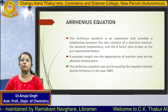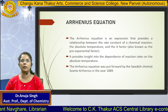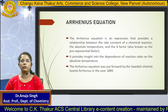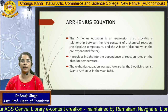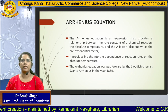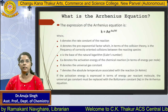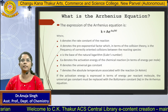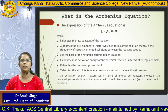Coming to the Arrhenius Equation. The Arrhenius Equation is used to determine the relationship between the rate constant of the chemical reaction and the temperature T. The rate constant is denoted as K. The equation is: K = A · e^(−Ea/RT), where K is the rate constant, A is the Arrhenius constant, E is exponential, Ea is activation energy, R is the gas constant (8.314), and T is the absolute temperature.